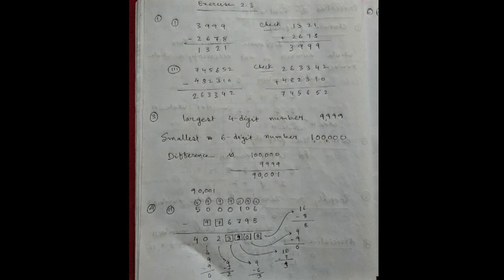And next, number 2 also same. 7,45,652 minus 4,82,310 equal to 2,63,342. Now second, 2,63,342 plus 4,82,310 equal to 7,45,652.